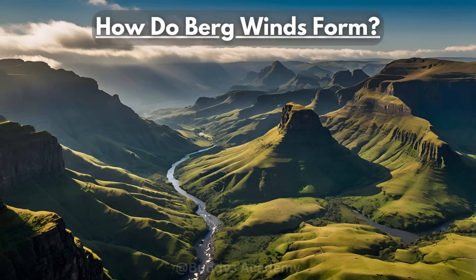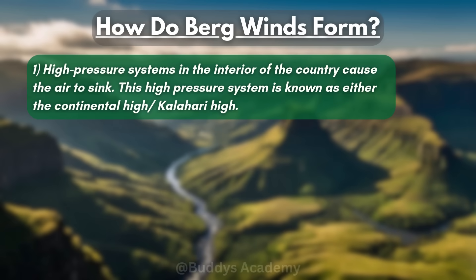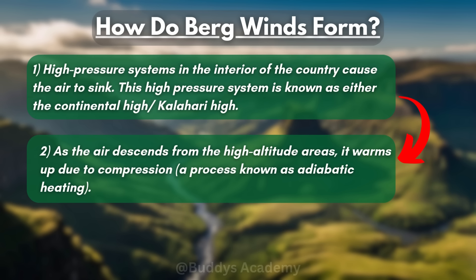So how do these Bergwinds actually form? We'll first go through a quick summary to gain a basic understanding, and then we'll dive into this topic in detail. Bergwinds form as a result of the following combination of factors. Number 1: high pressure systems in the interior of the country cause the air to sink. This high pressure system is known as either the Continental High or the Kalahari High — they are the same thing, just different names. As the air descends from the high altitude areas, it warms up due to compression.